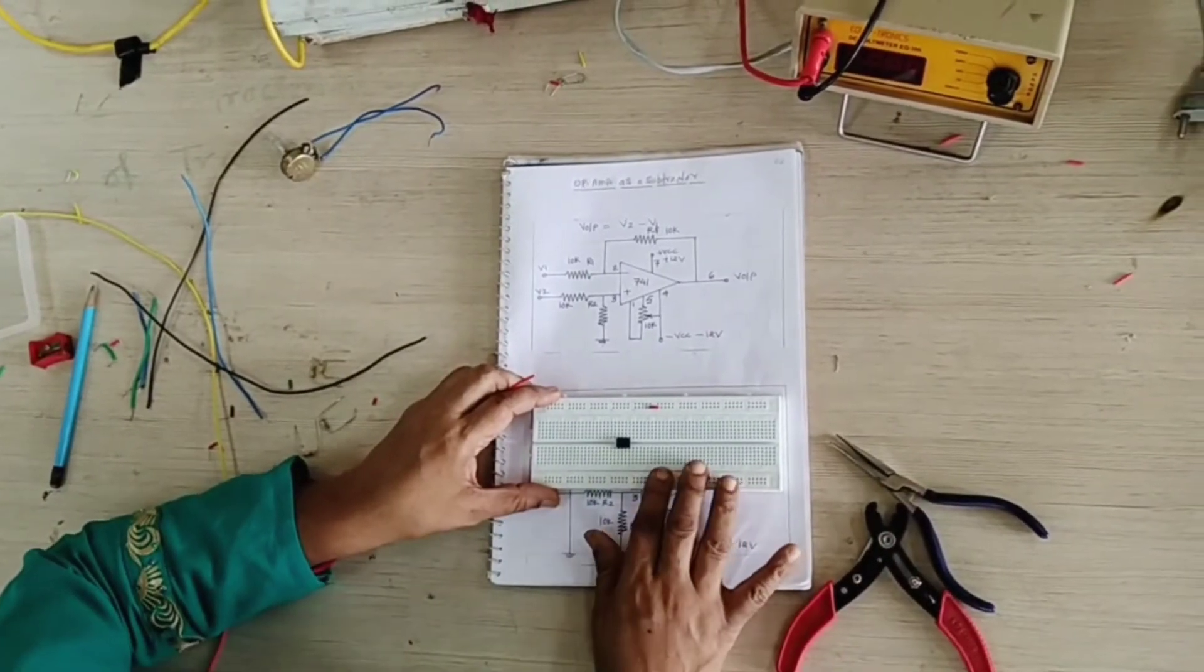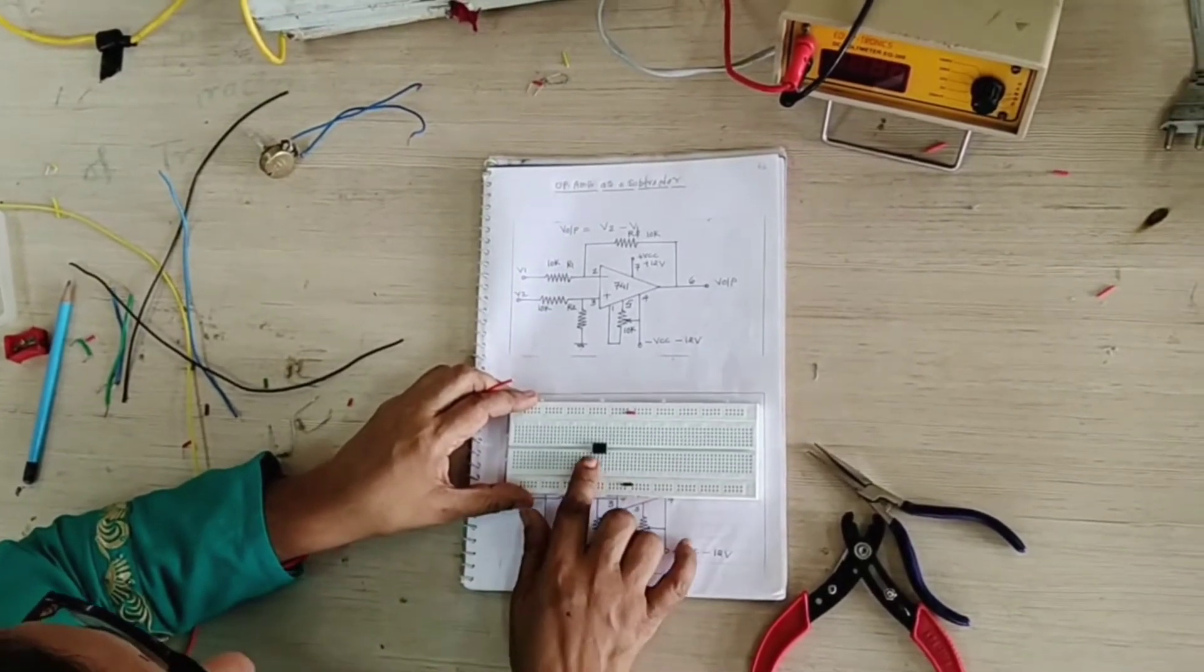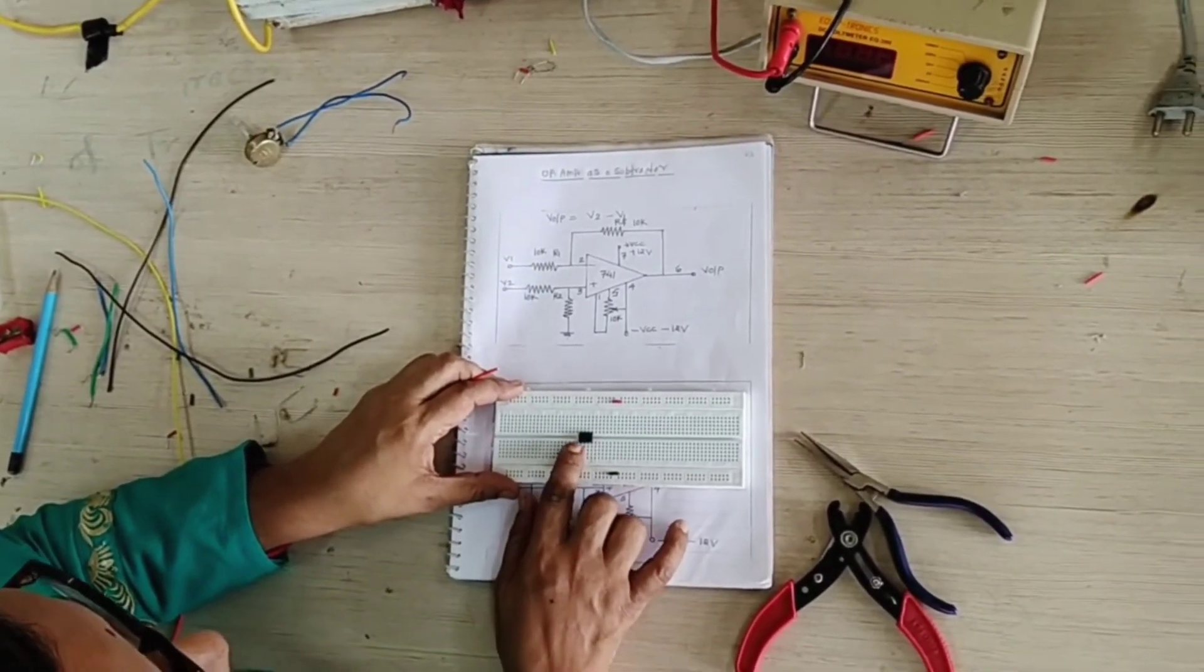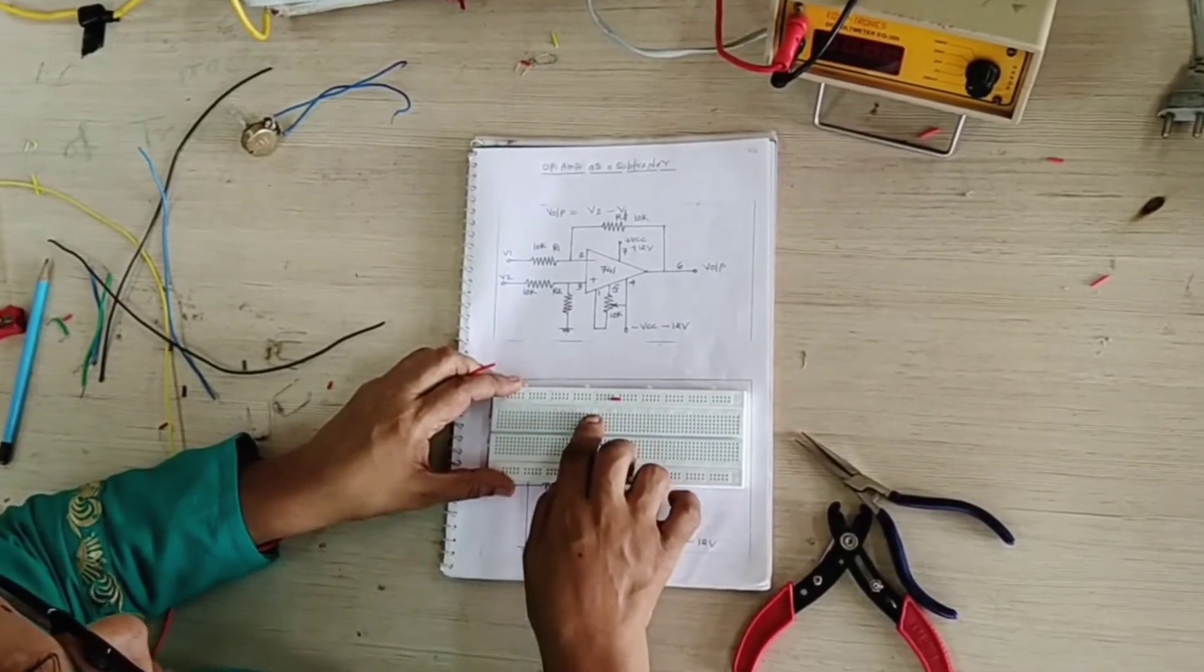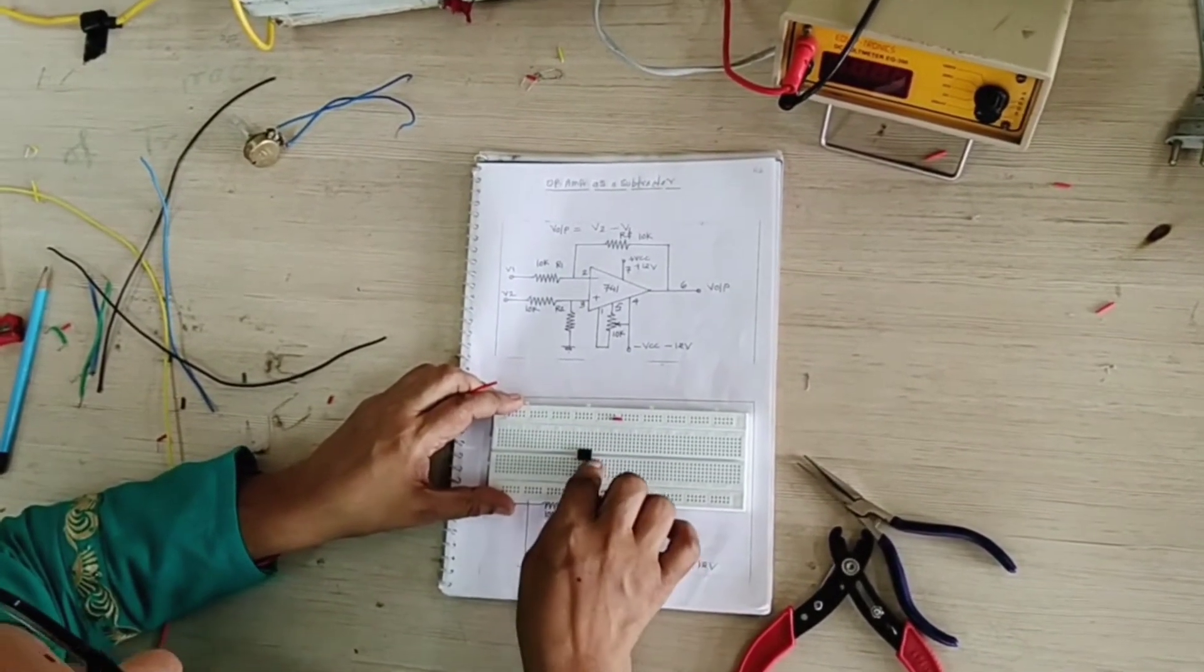Now we are assembling these circuits. Now see here, this is IC 741: 1, 2, 3, 4, 5, 6, 7, 8. It is 8 pin IC.